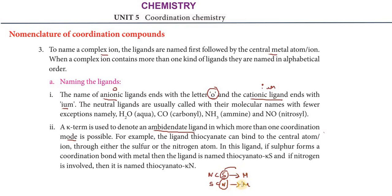The sulfur donor and the nitrogen donor both act as potential binding sites. For example, the ligand thiocyanate can bind to the central atom through either the sulfur or the nitrogen atom. If sulfur forms the coordination bond with the metal, the ligand is named thiocyanate-κS. If nitrogen forms the coordination bond, it is named thiocyanate-κN.